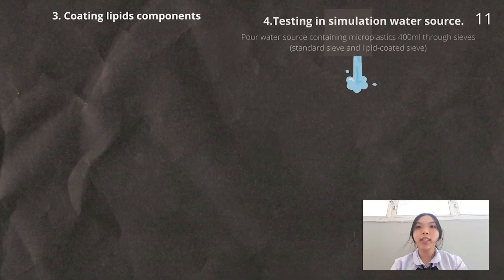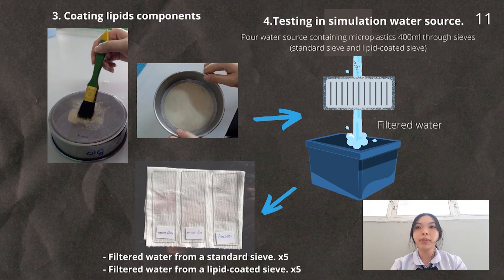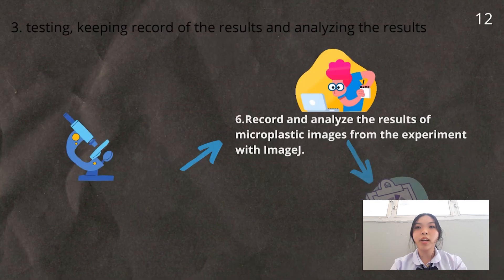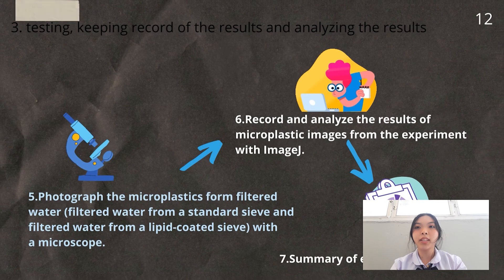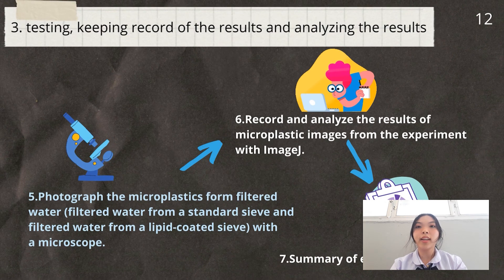Next is coating the lipid components onto the sieve. We then tested two types of sieve in the simulated water source five times. In the last process, we photographed the microplastics from the filtered water with a microscope, recorded and analyzed the results using ImageJ, and summarized the experiment results.